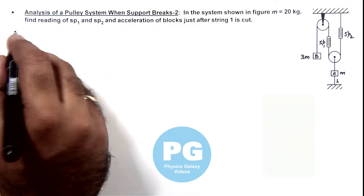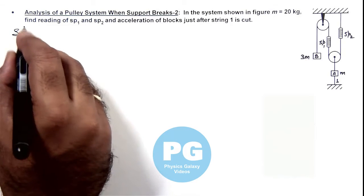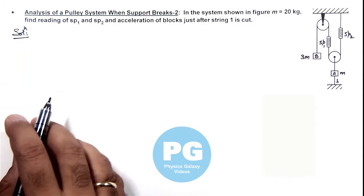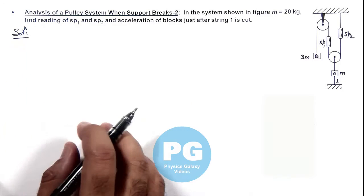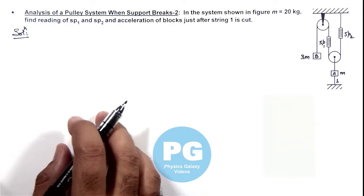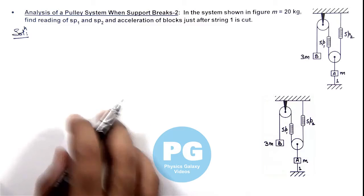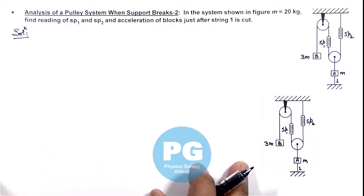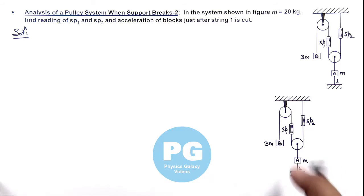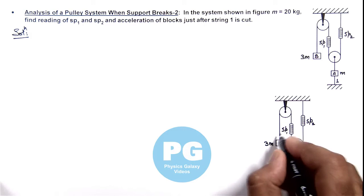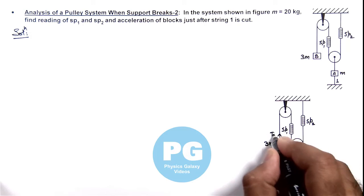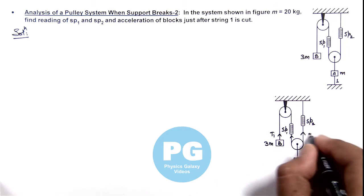So again like the previous illustration here, we need to analyze the forces in equilibrium and then after string 1 is cut. So here if we have a look, in this system if tension acting on block B is T1, then throughout this string tension will remain T1.